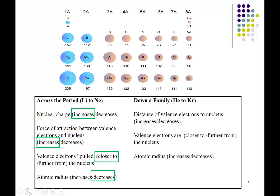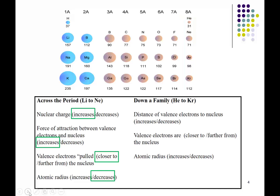Down the periodic table, the most important thing is that the valence electrons are further from the nucleus. Since valence electrons determine the size of the atom, when they are located further from the nucleus, the atomic radius increases. These explanations make use of the electronic structure and the position of the valence electrons to explain these trends, and the same process applies to the other trends we will look at.